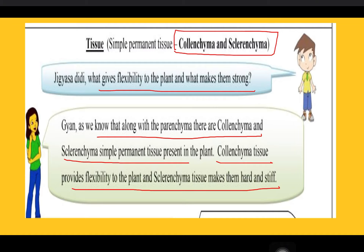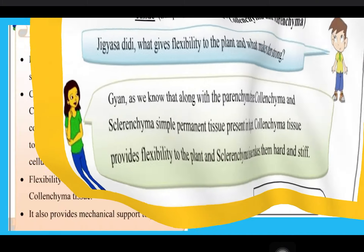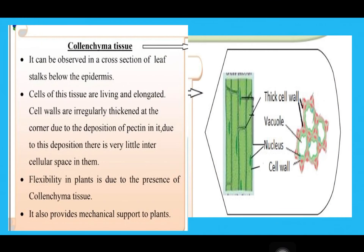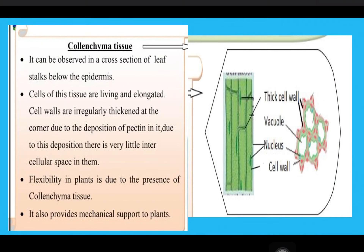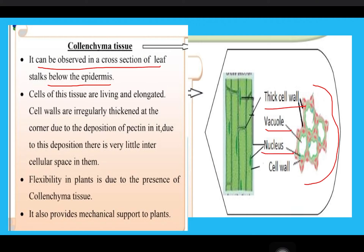Colenchyma can be observed in a cross-section of a leaf stalk below the epidermis. You can see it has a thick cell wall at the corners; the cells are present in the maximum area, the nucleus is towards the end, and there is a cell wall. The cells of this tissue are living and elongated.